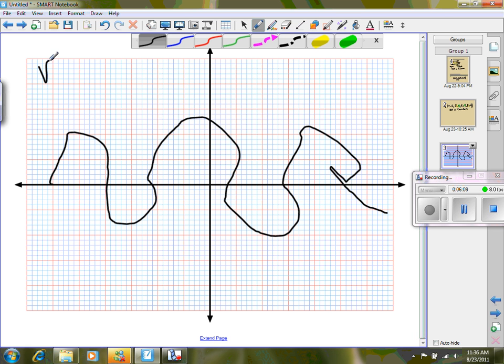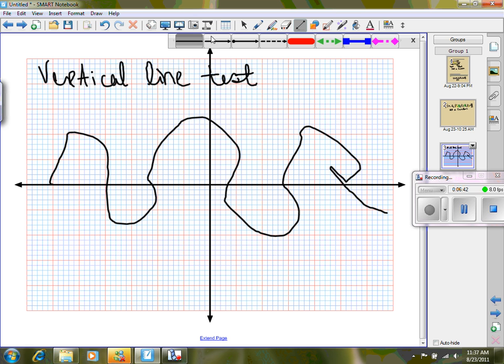For it to be a function, it must pass the vertical line test. What the vertical line test is, it says I have to be able to drop a vertical line anywhere along my graph, and if it touches it once and only once, everywhere or anywhere on the graph, then I have a function. If it touches it more than once, I do not have a function. So let's drop a vertical line right here. I'll just drop it right here. Oh, it passes right there. But if I drop it right there, it fails. So this particular graph is not a function.